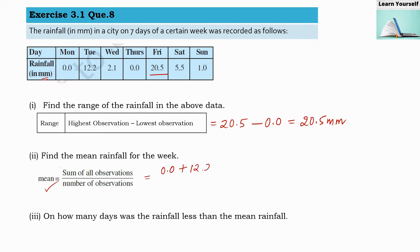All the seven observations we are going to write here and divide by total number of observations. That means how many observations are there? For seven days, seven observations are there, so here we are going to write seven.